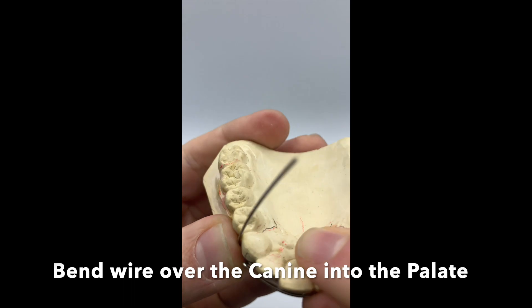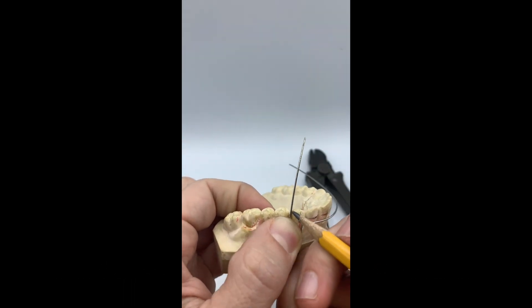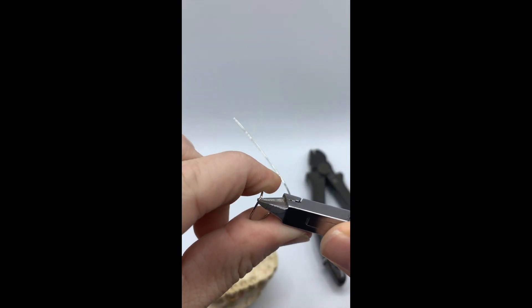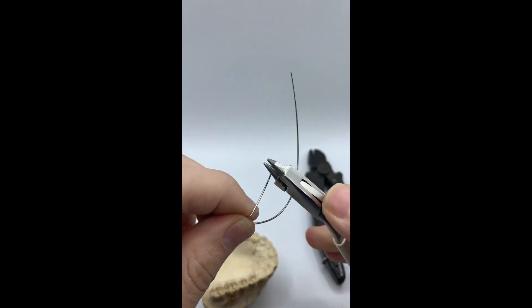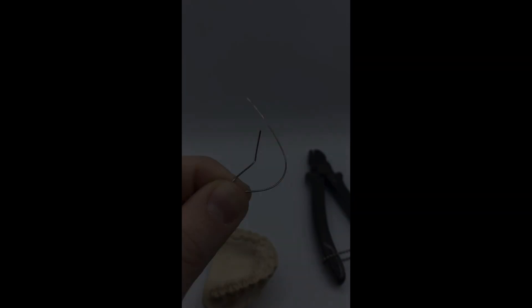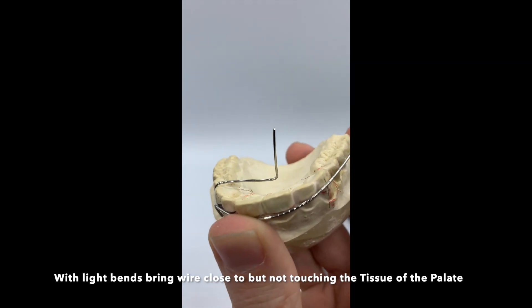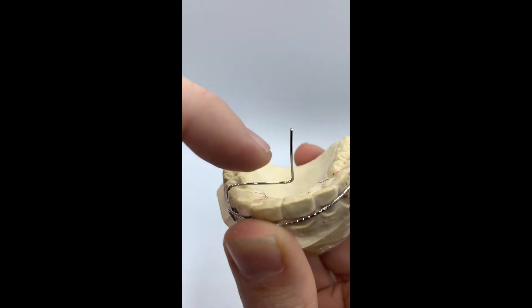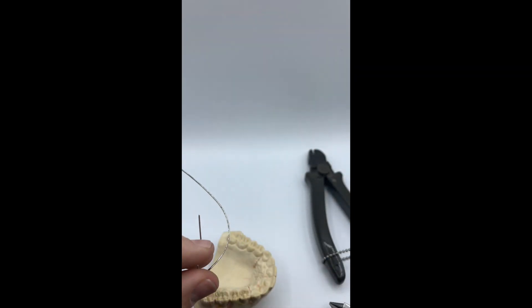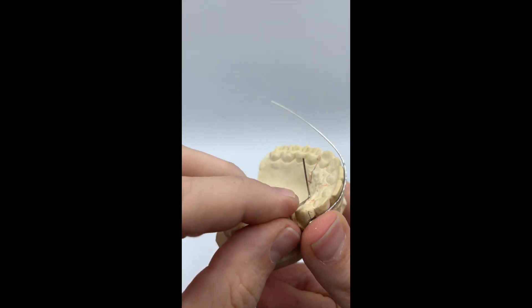Once the wire is touching the canine, we want to now bend the wire into the pallet. You can mark on the wire with a carbon marker or pencil where you have to bend. A short series of bends, you want to bend the wire towards the pallet. If you bend too far down, the wire is going to touch the pallet and not allow the wire to sit properly. Then, just unbend it.